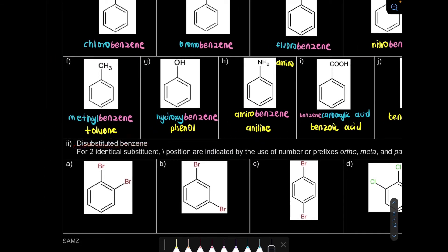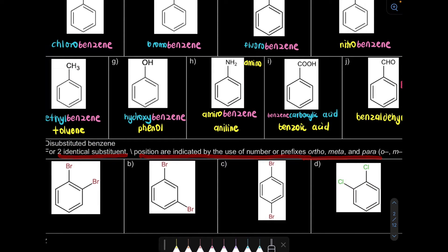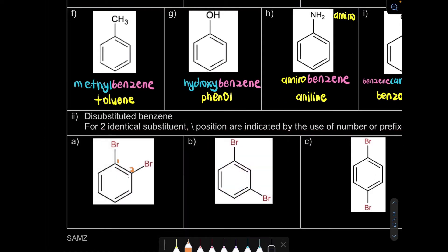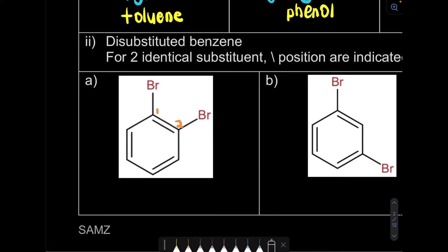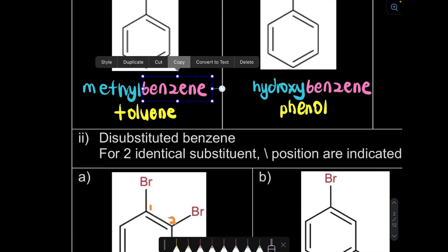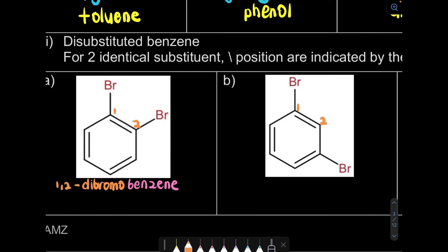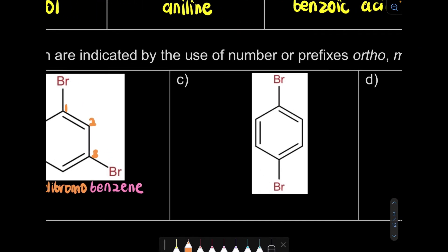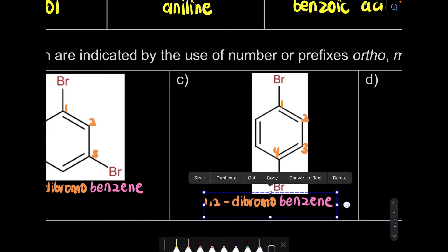Now we're going to look at di-substituted benzene. For two identical substituents, the positions are indicated by number, and we want the smallest numbers. Any way you number it, you get the same result. Question A: 1,2-dibromo-benzene. Question B: 1,3-dibromo-benzene. Question C: 1,4-dibromo-benzene.